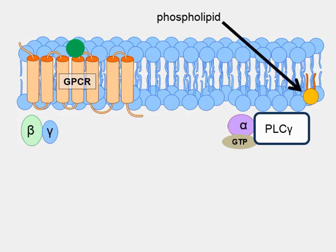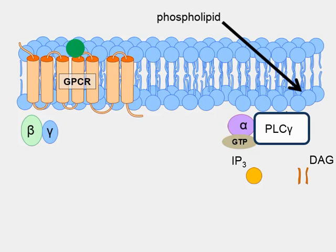Phospholipase C-gamma extracts a molecule of phospholipid from the cell membrane and converts it into two components: inositol triphosphate and diacylglycerol. The cell membrane contains phospholipids, which are portrayed as heads and tails — the head part contains a phosphate group and the tail is made up of fatty acyl chains. Phospholipase C-gamma separates the heads and the tails of these phospholipid molecules.